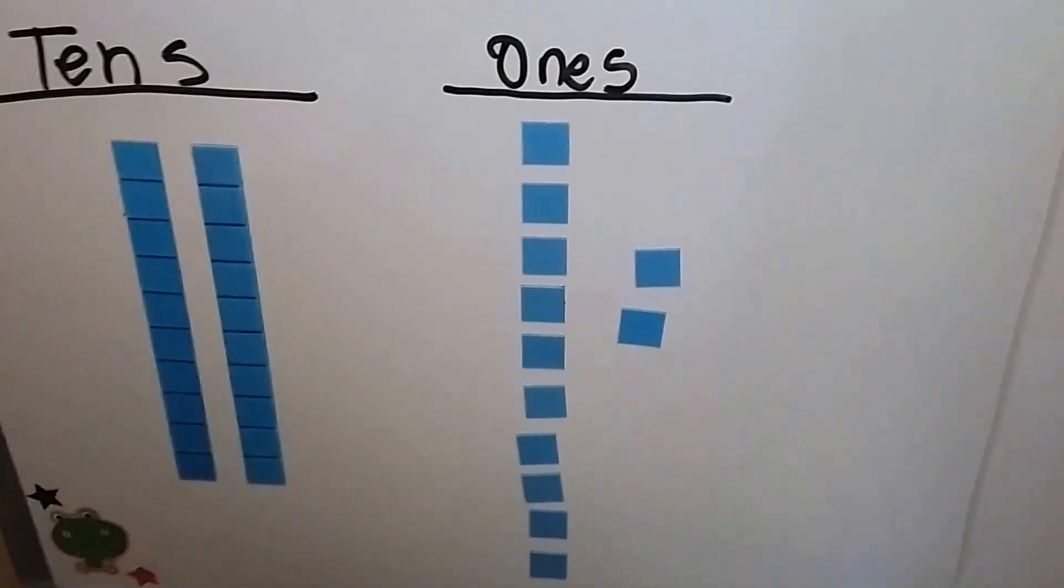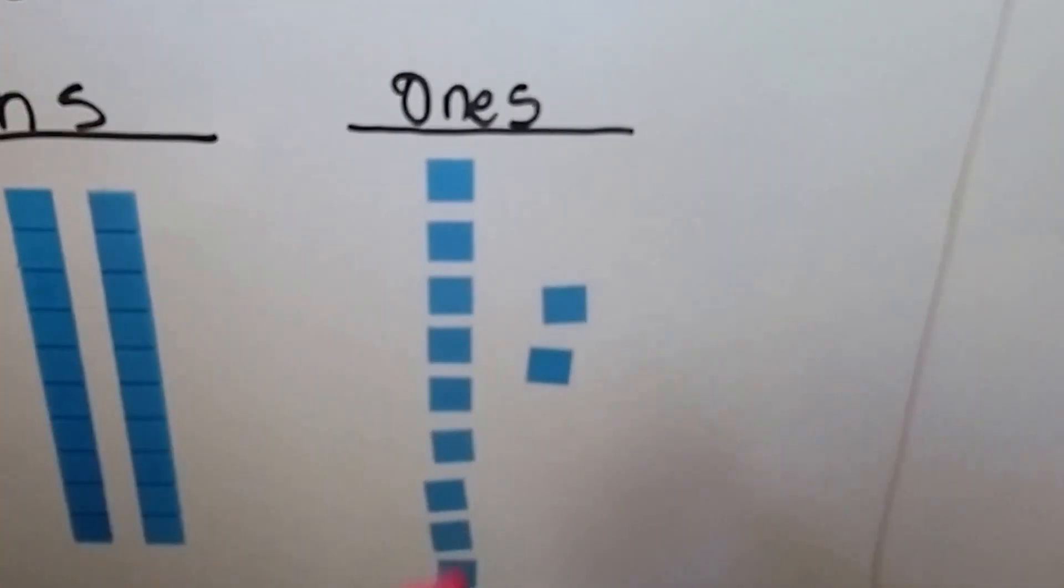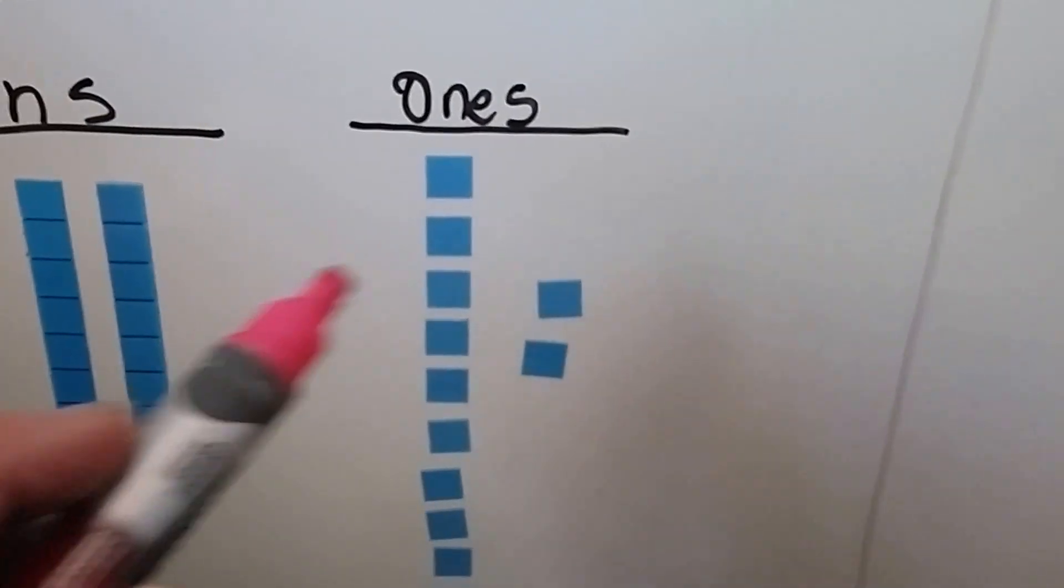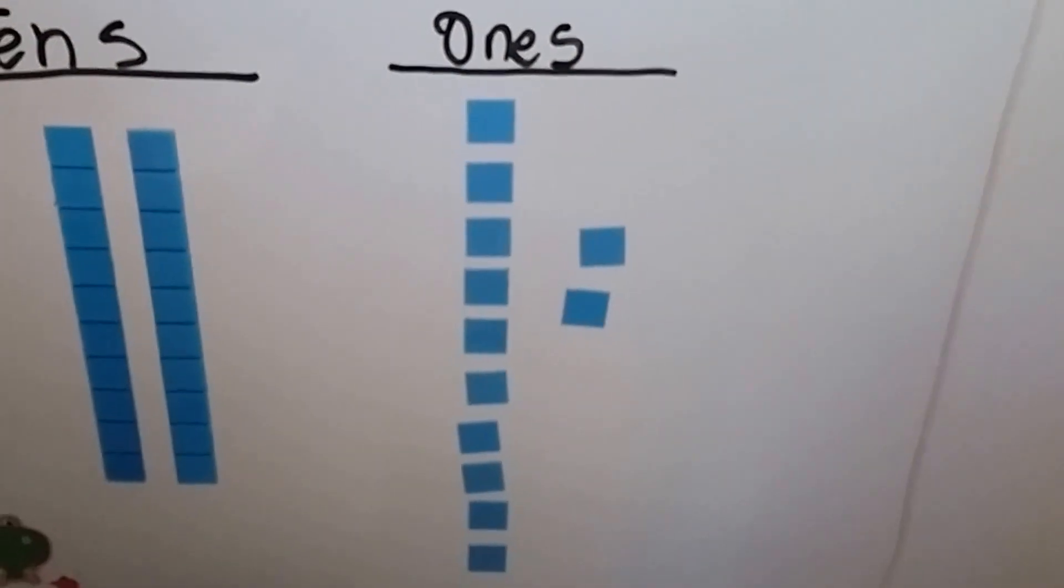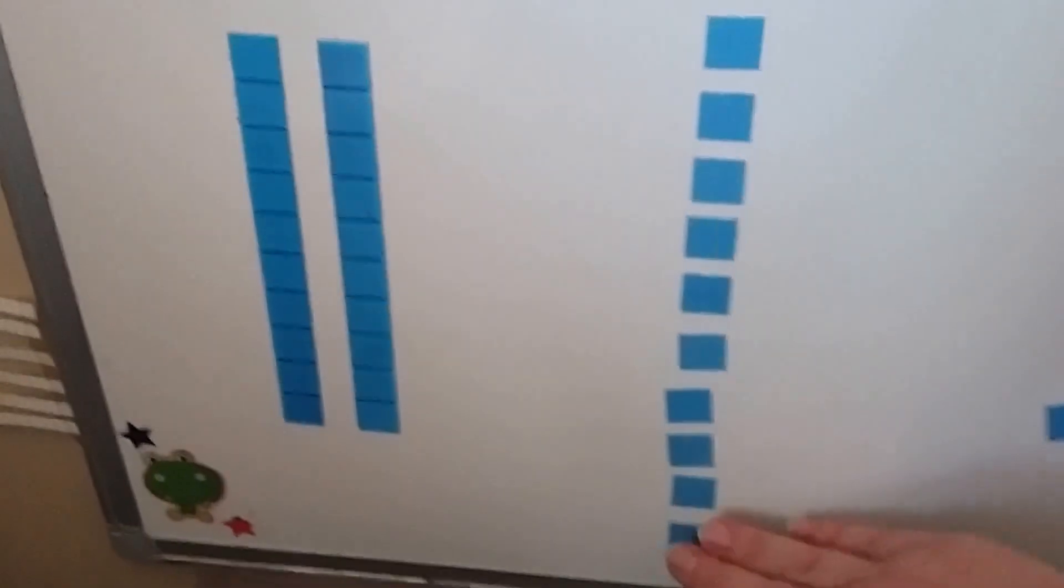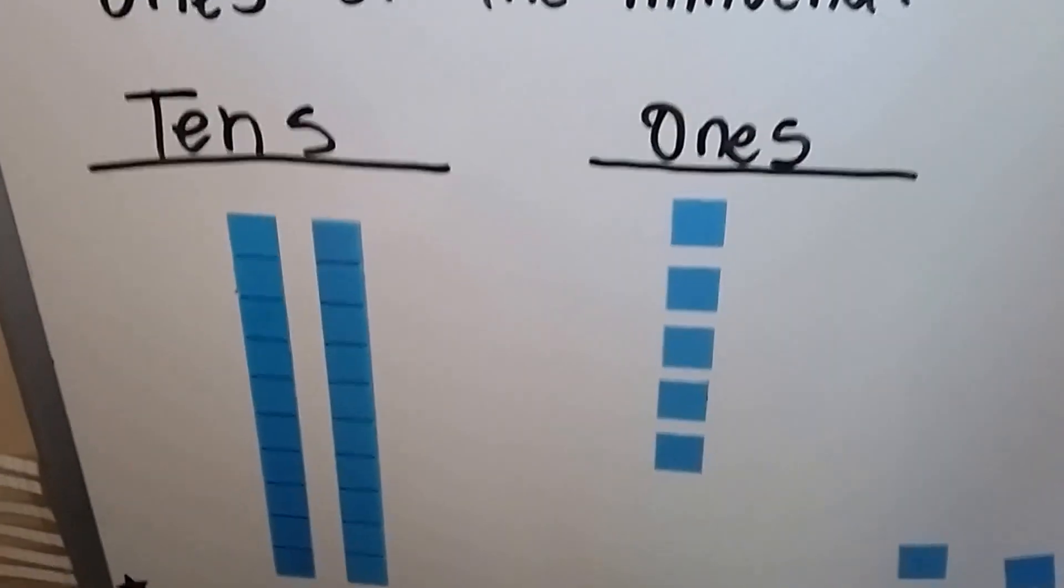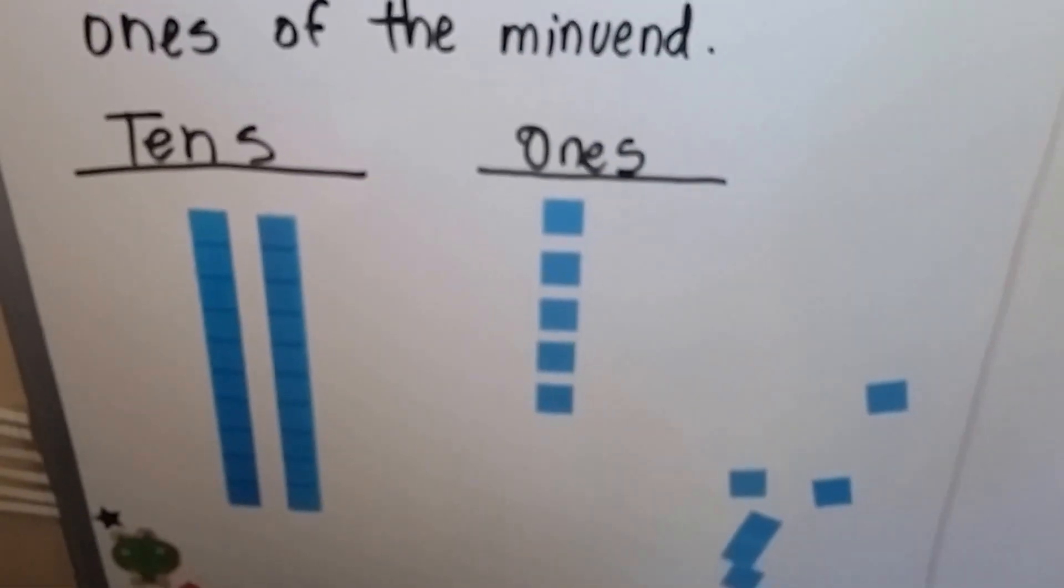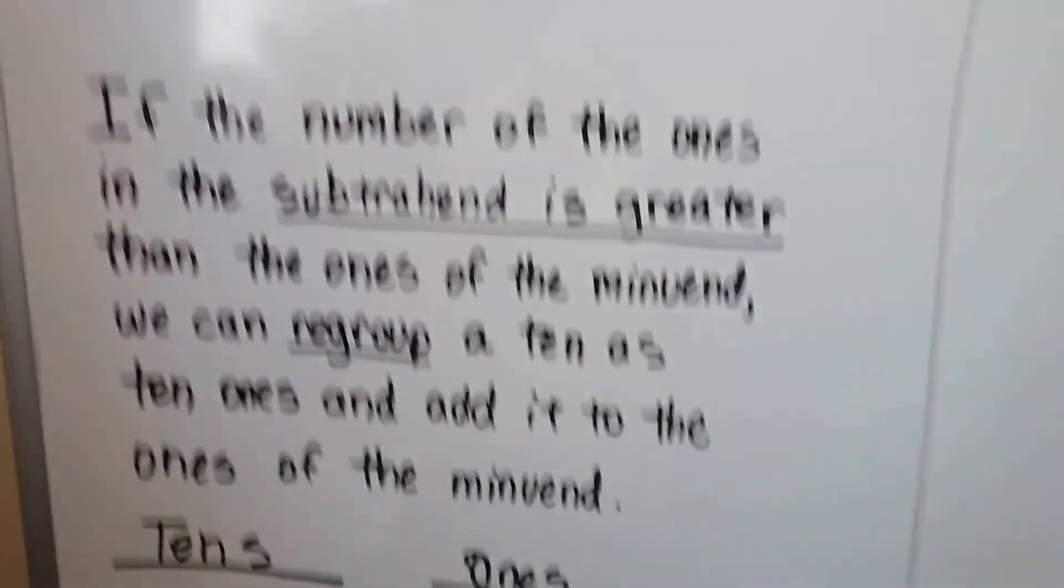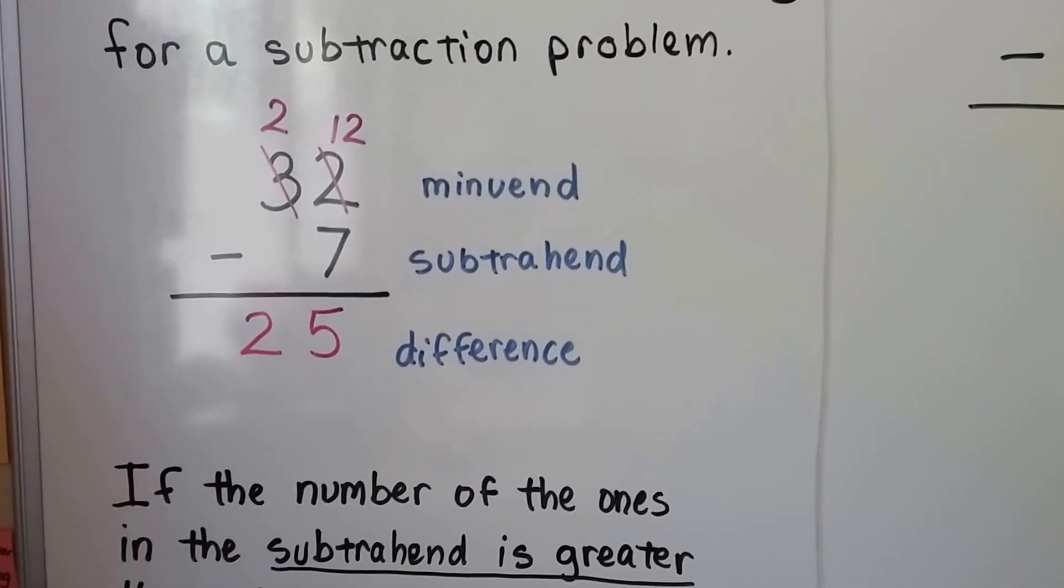We had 32. We regroup one of the tens. Here's 10 here. We take it from the tens place and give it to the ones place. Now we can take 7 away. 1, 2, 3, 4, 5, 6, 7, and it leaves 2 tens and 5 ones. So yes, we did it correctly. It left 25, 2 tens and 5 ones. That was the difference.